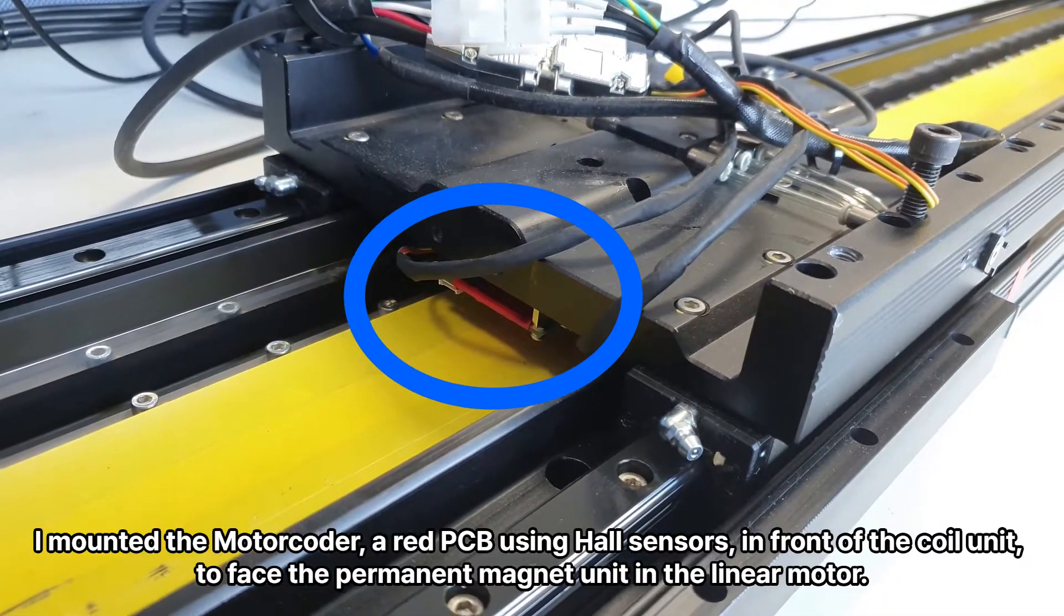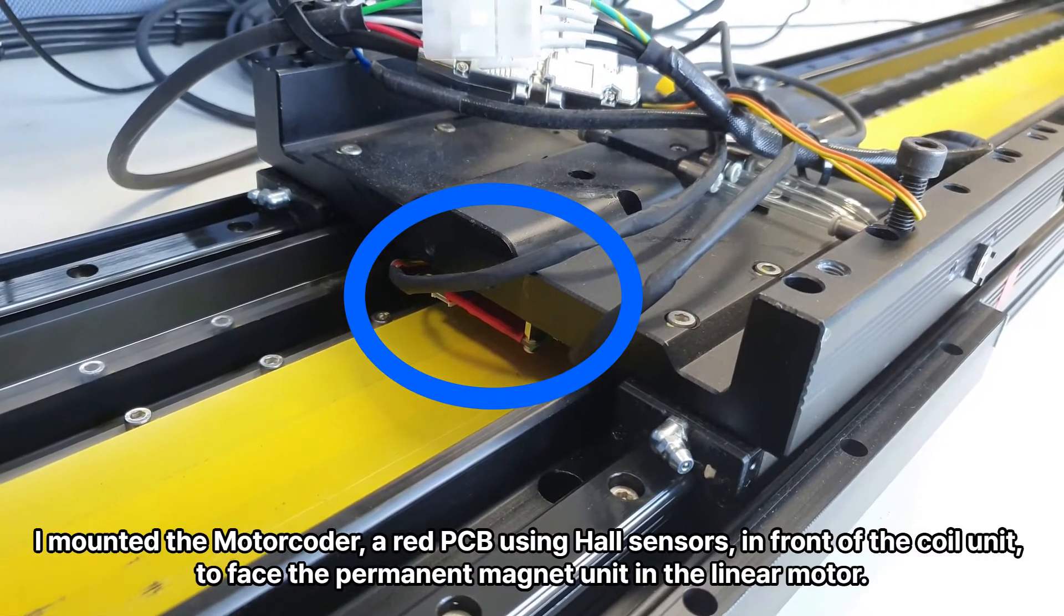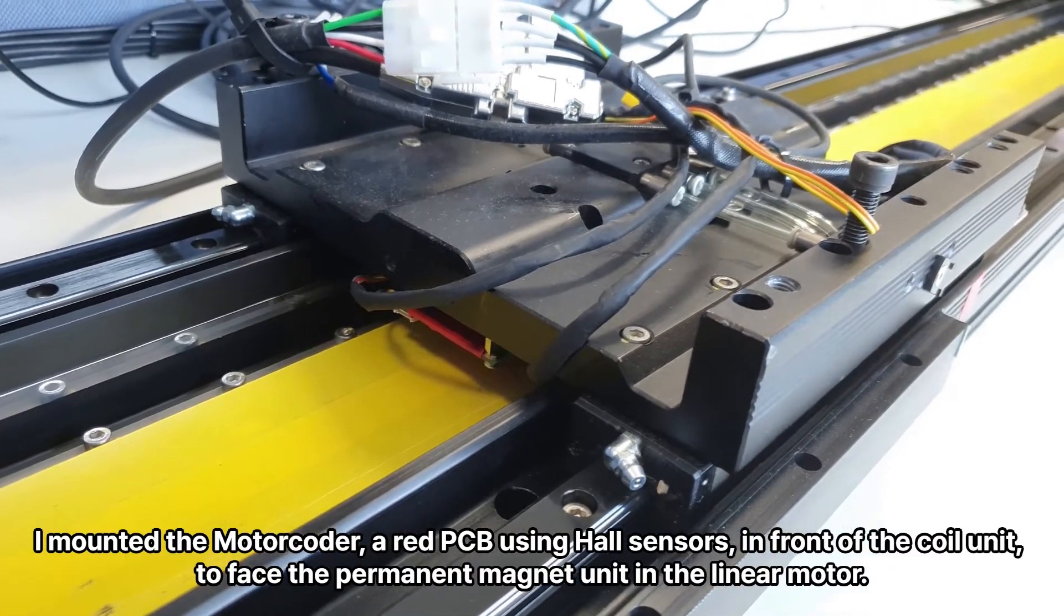I mounted the motor coder, a red PCB using Hall sensors, in front of the coil unit, to face the permanent magnet unit in the linear motor.